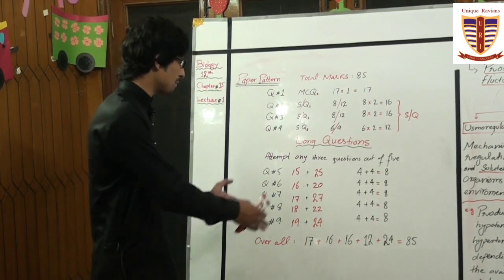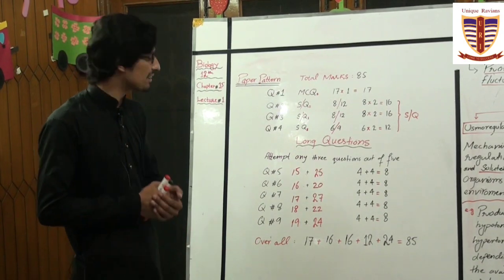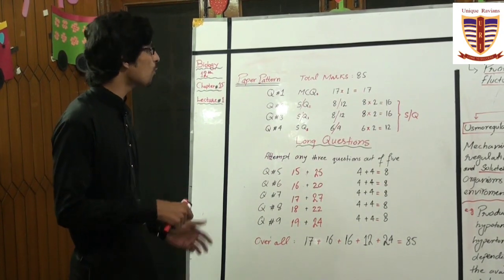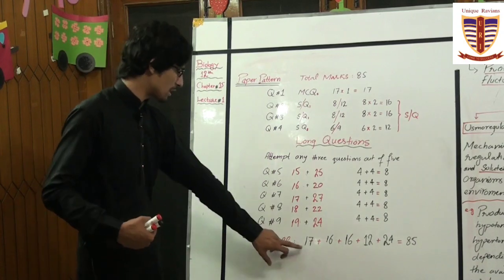So in this way, these are your 5 long questions, from which you have to attempt any 3. Overall, let's review - the first question we had was Question No. 1.